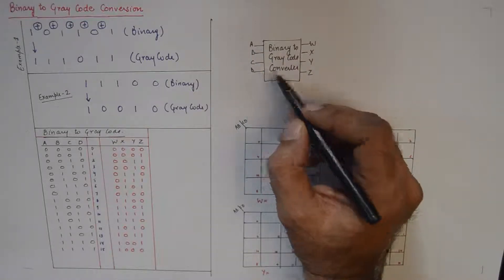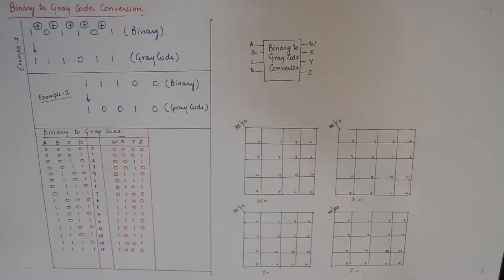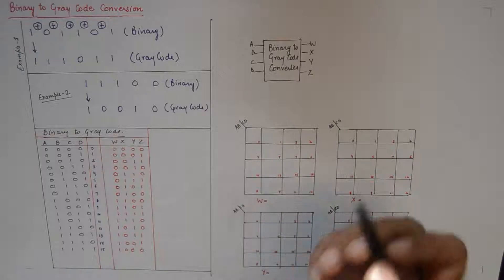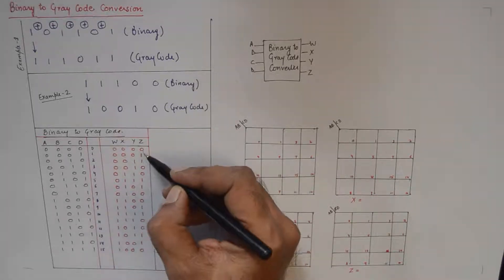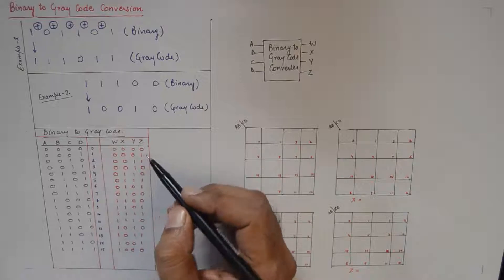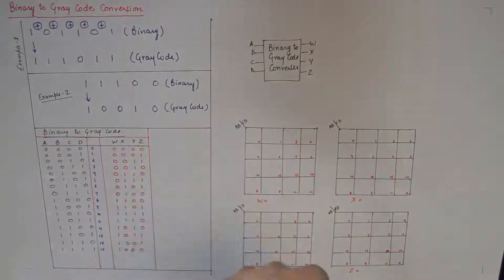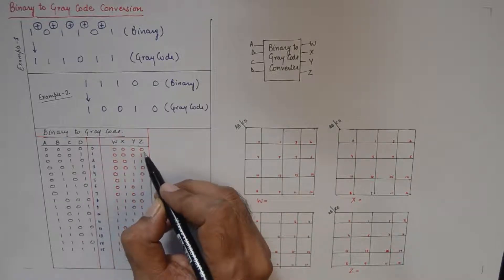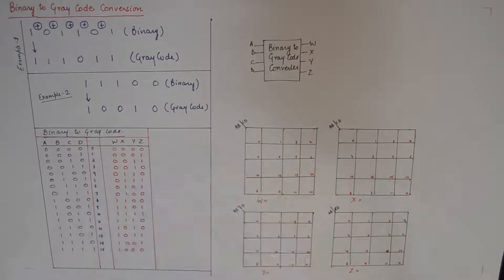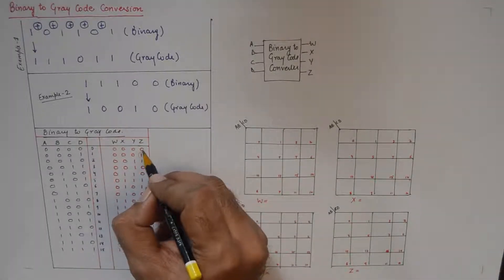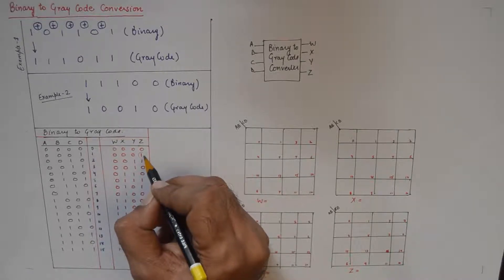Now please understand, gray code is a special code that differs from the preceding number by a single bit. For instance, if you check out these gray codes as we move from 0 to 15, the first gray code is differing from the second gray code in only one bit. As you can see, this bit has changed only as we go from 0 to 1.